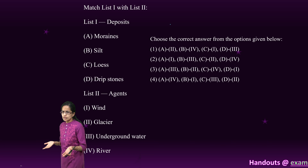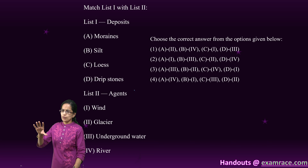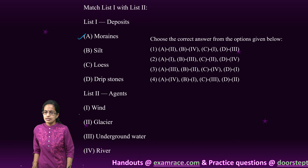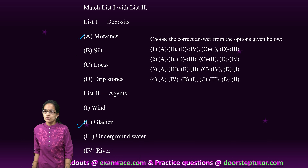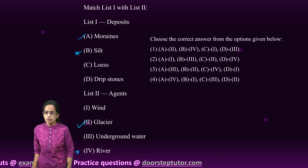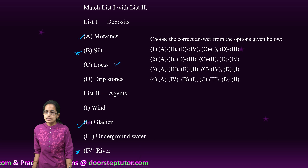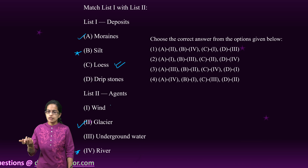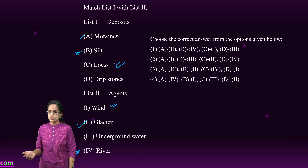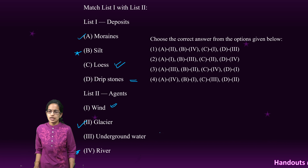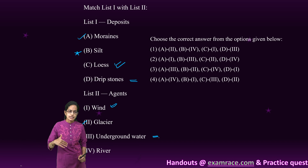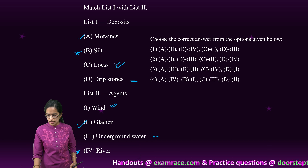Matching deposits with their agents: moraines are depositions formed by glaciers; silt deposition occurs through rivers; loess occurs through wind action in desert areas; and in karst topography, drip stones are formed by underground water. Those are the correct matches for these questions.